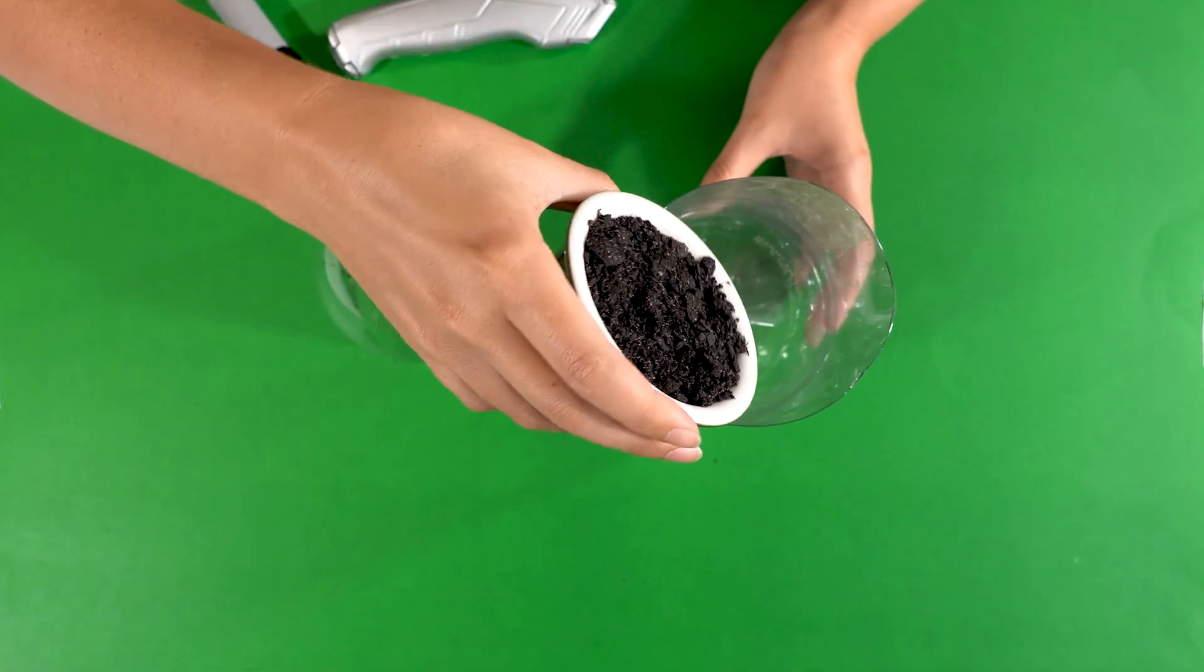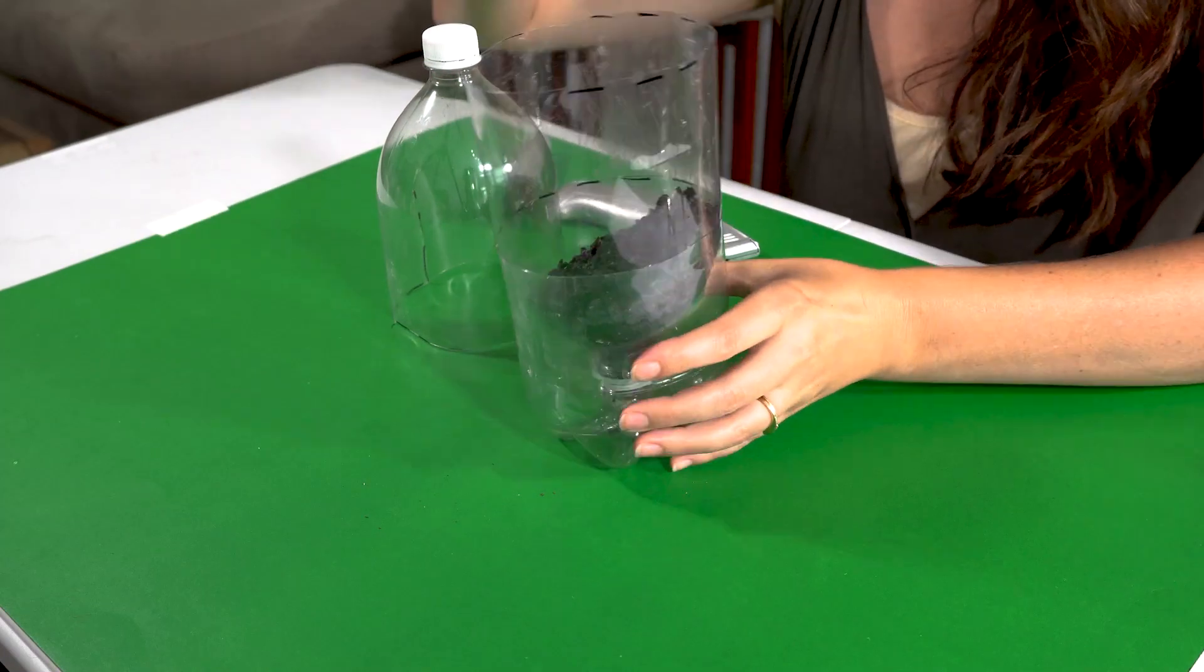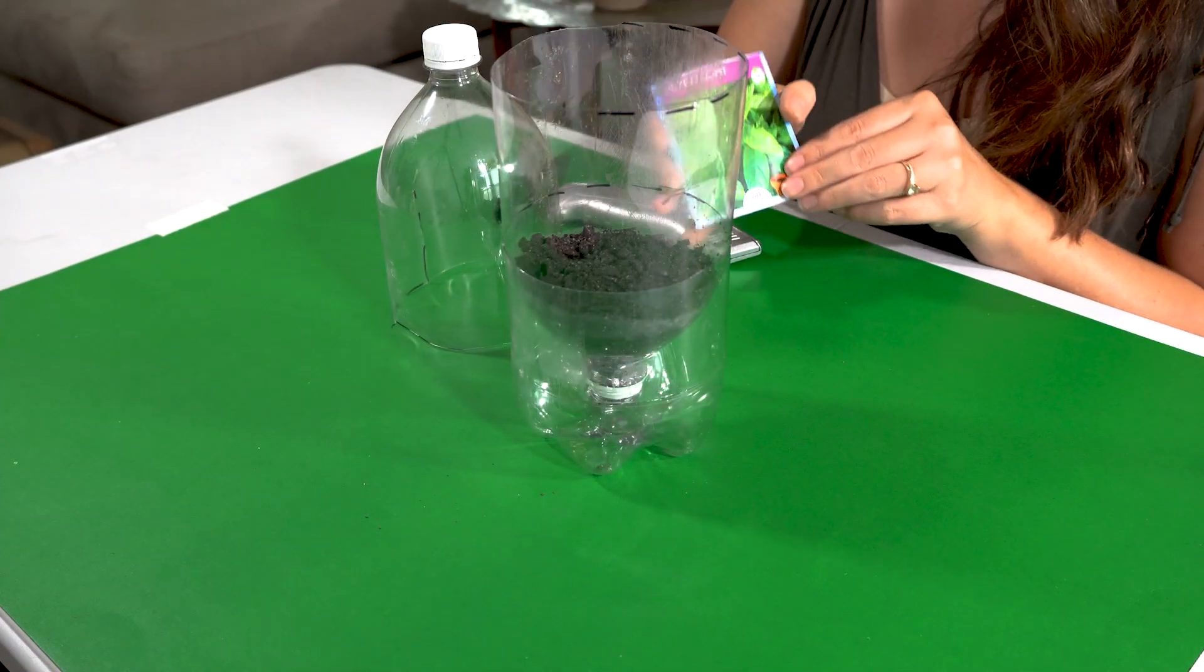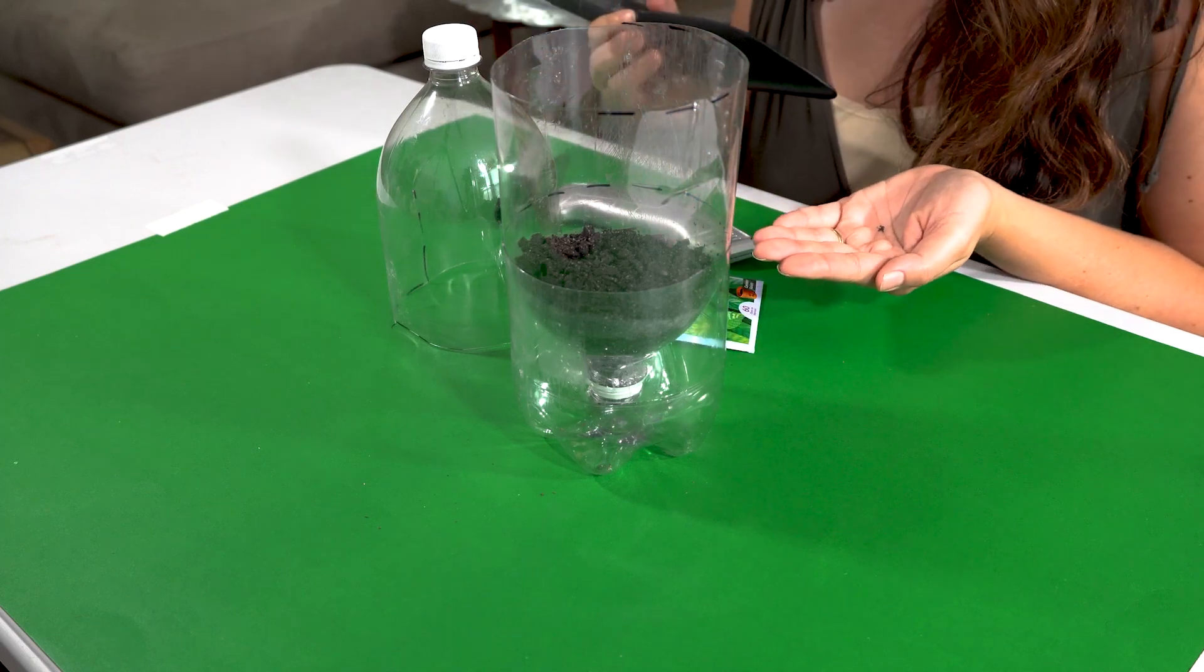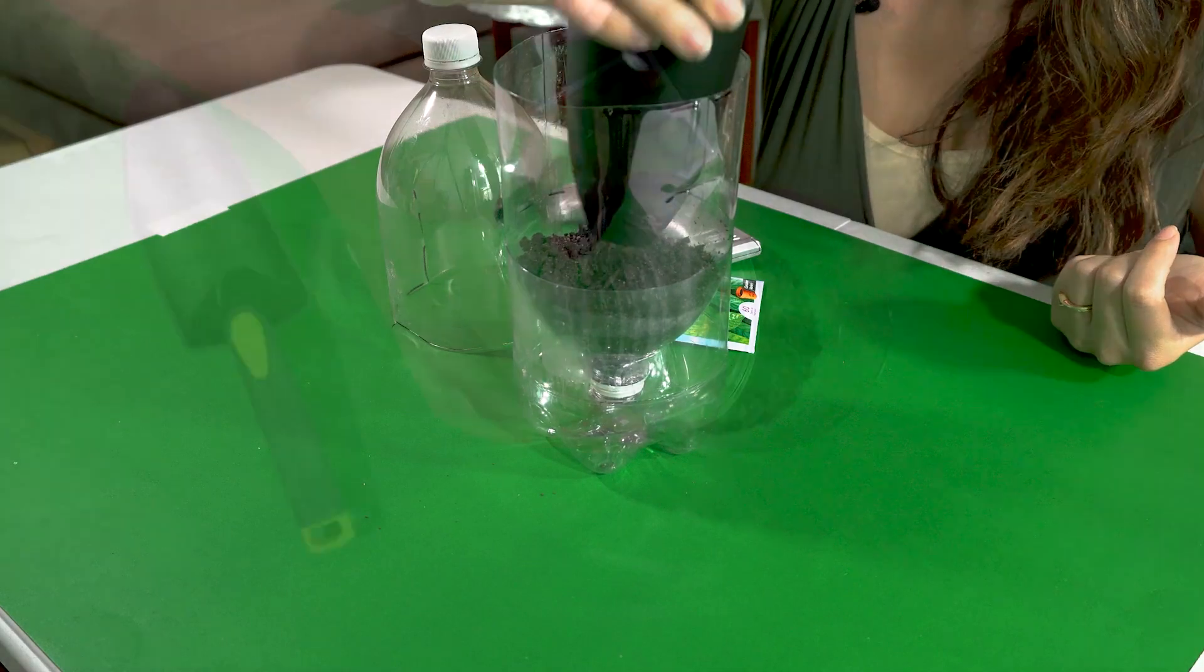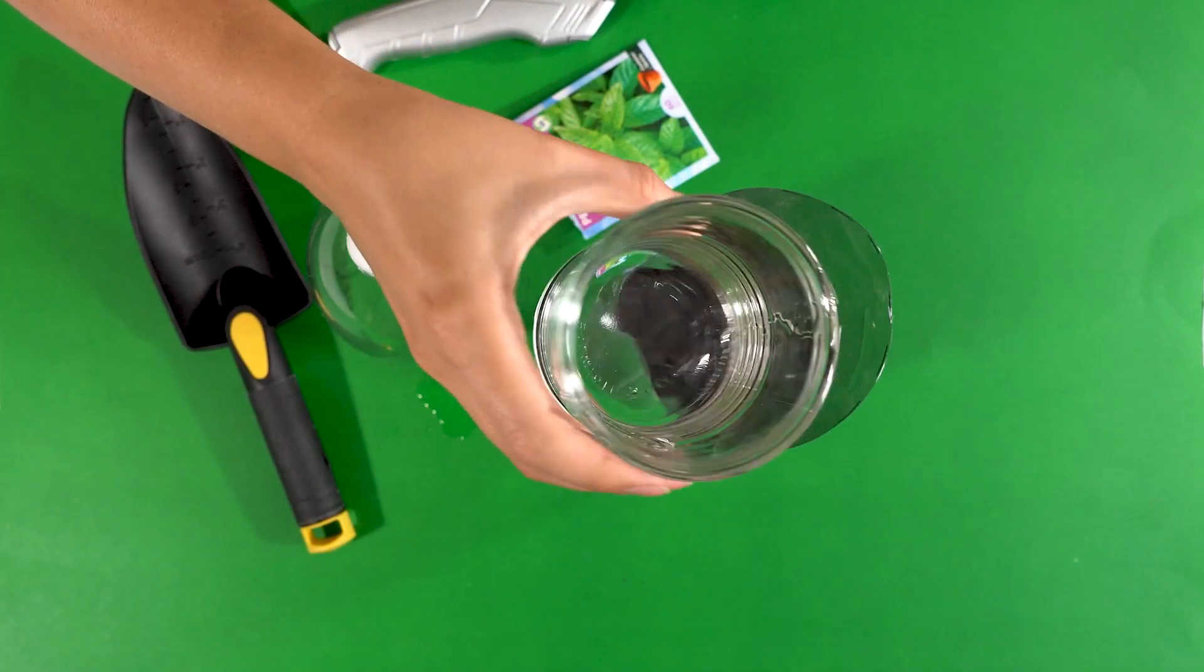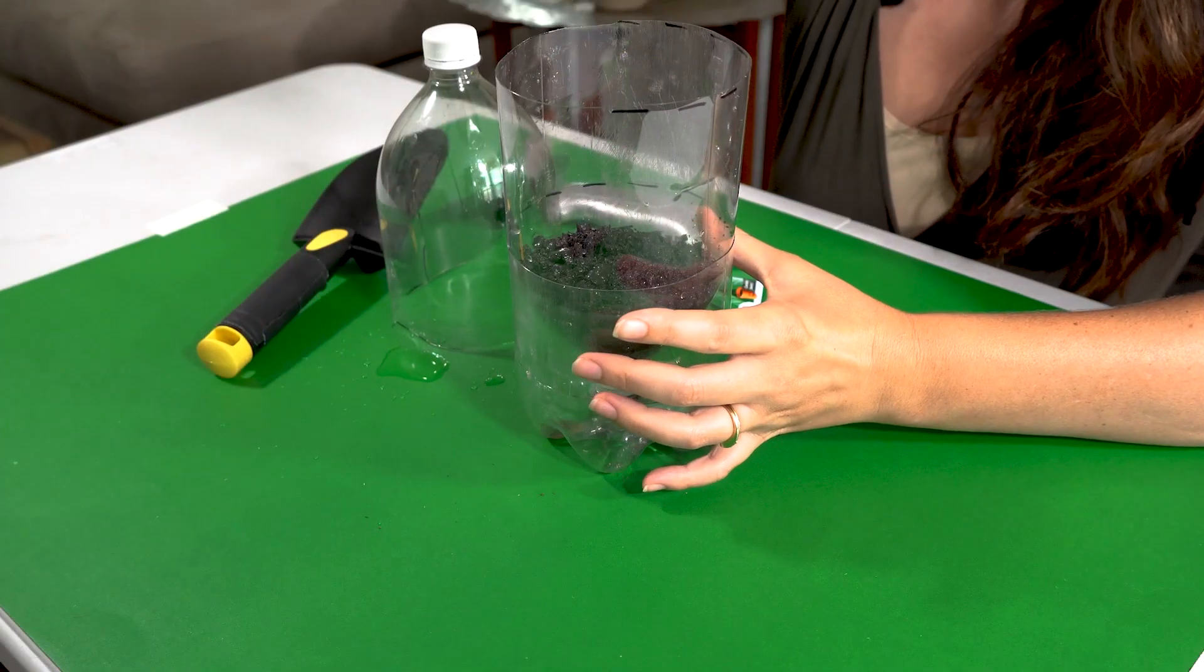We will pour our soil up to our dashed line. Next we'll get our mint seeds and we will plant them in our soil just below the surface. Slightly dust our soil and then we will pour a little bit of water into our mini greenhouse.